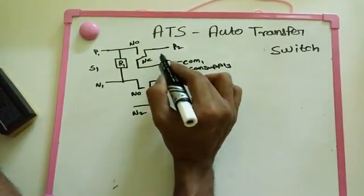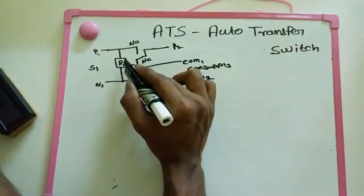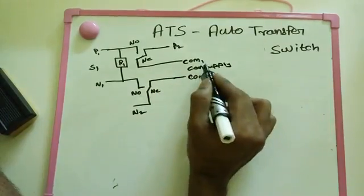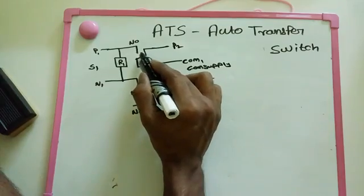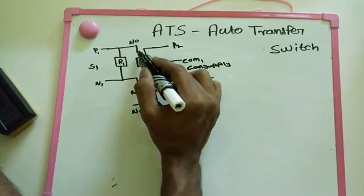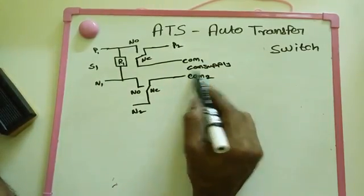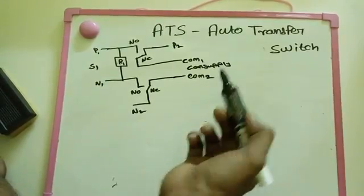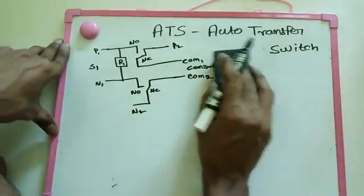See here - if supply two is switched on, this coil is not energized because we are giving supply one. At that time we get supply two through P2 and N2 to get continuous supply. Suppose supply one is switched on - this relay is energized. That time the NC goes to connect NO, and this NC goes to connect NO. That means the common connects to NO. So at that time we get power supply through S1 - supply one. So we got continuous common power supply for the ATS panel.